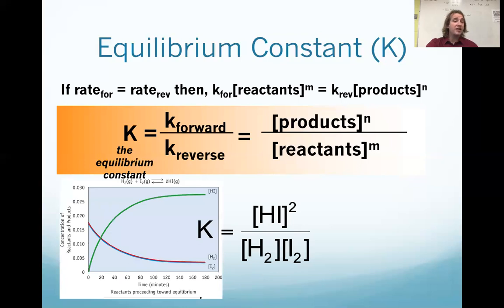And so if we were going to write this for the example we were just looking, here's our balanced equation. Our product was the hydroiodic. It's going to be raised to the second power because its coefficient is a two. That's going to be over the concentration of hydrogen times iodine, both raised to the first. And really we're just saying, based on the amounts we got, are we favoring reactants or products?